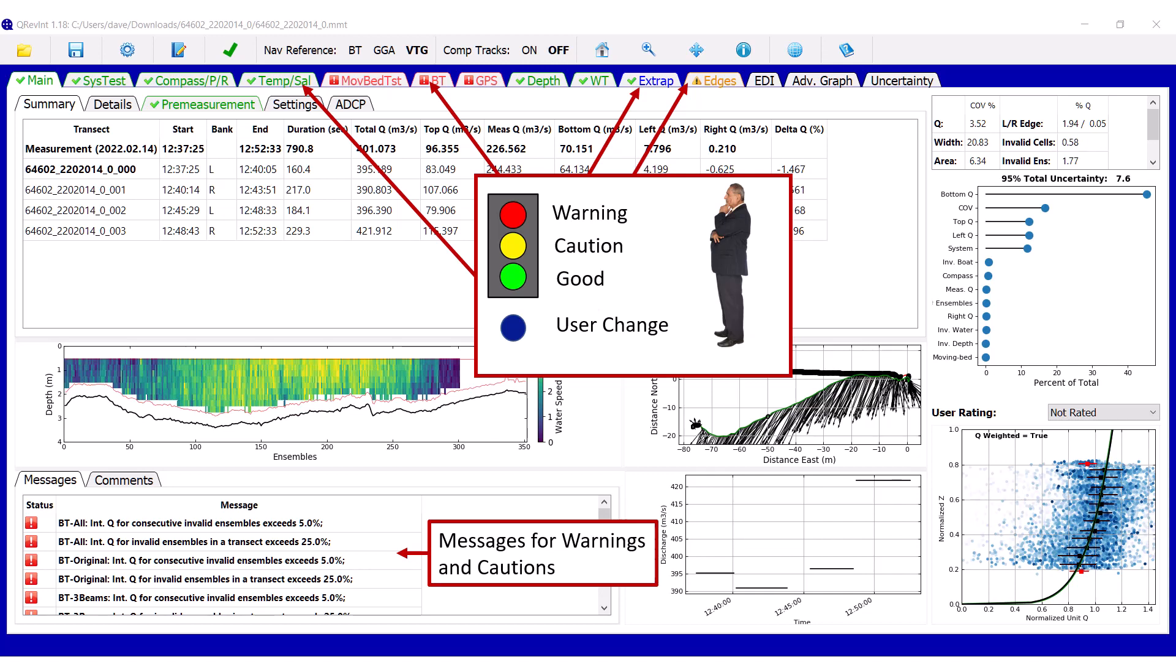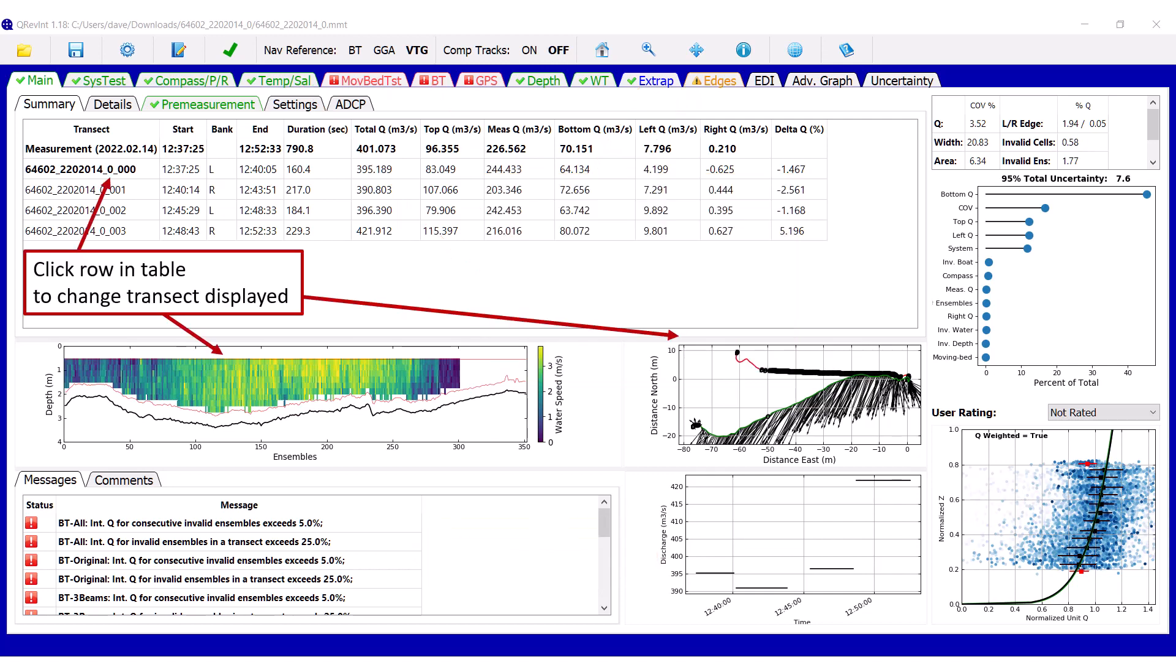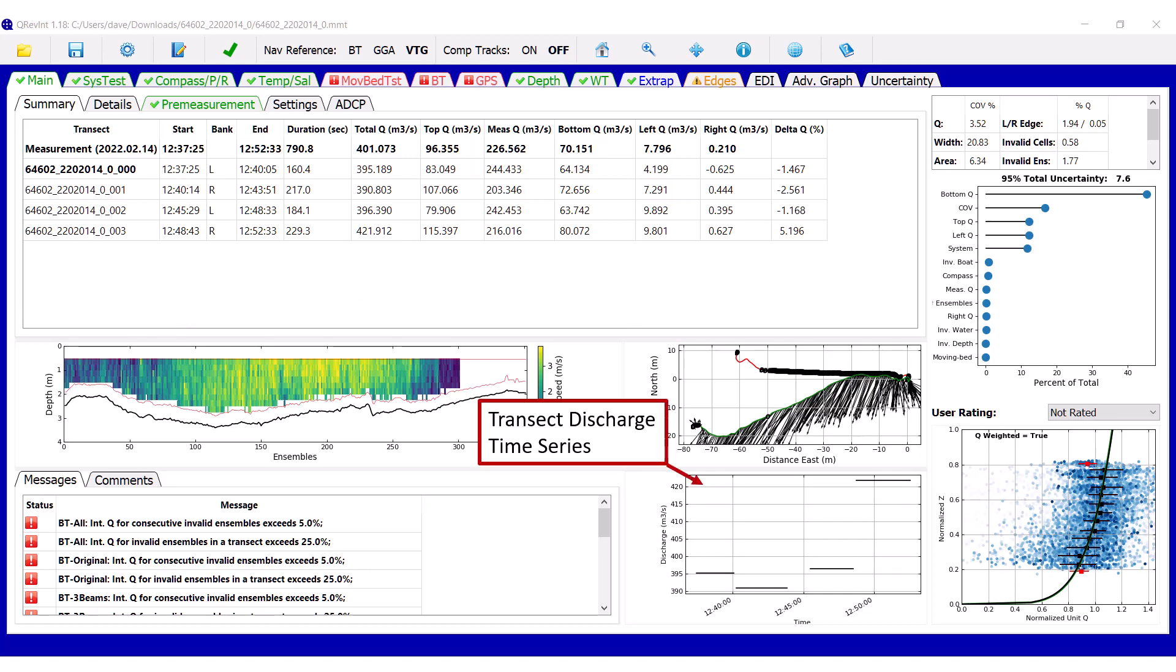If it's blue, that means that the user went in and changed one of the automated settings. So that as a reviewer, you could open this measurement, look at this screen and see immediately if the user changed something. In the bottom left are messages for the warnings and cautions. So you can see why those occurred even before you click on the tab and look at the specific dialog for that particular parameter. If you click on any of the rows in the table at the left, it will show the color contour plot and the ship track plot for that transect. Near the bottom, we have a transect discharge series. The horizontal lines you see there represent each of the transects and the mean discharge computed for that transect. This gives you an idea of the variability of the discharge between the transects.